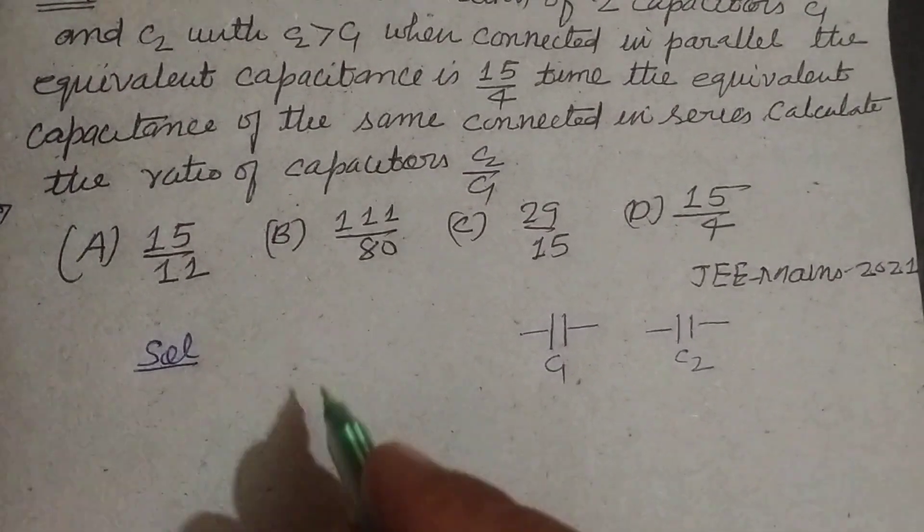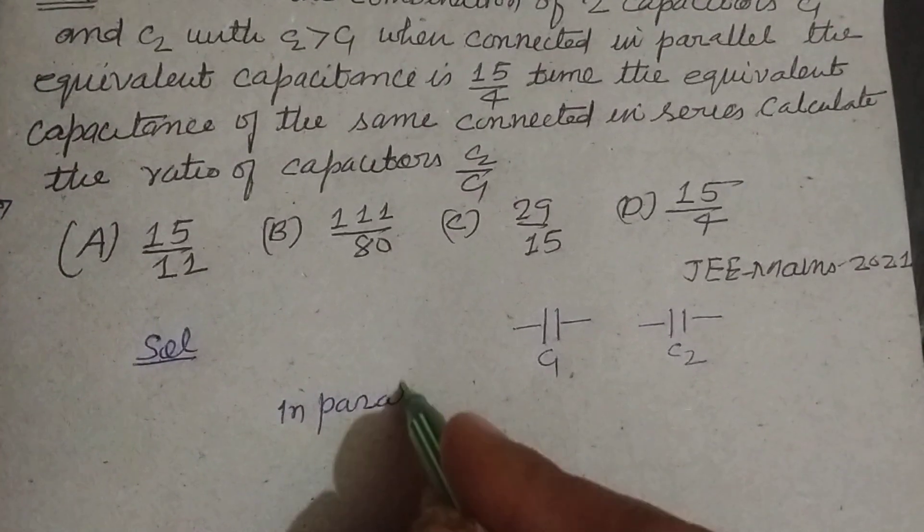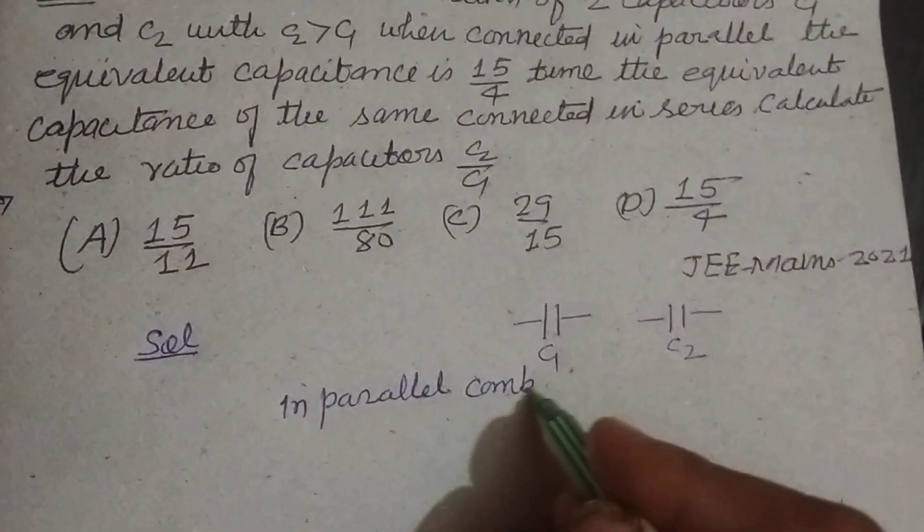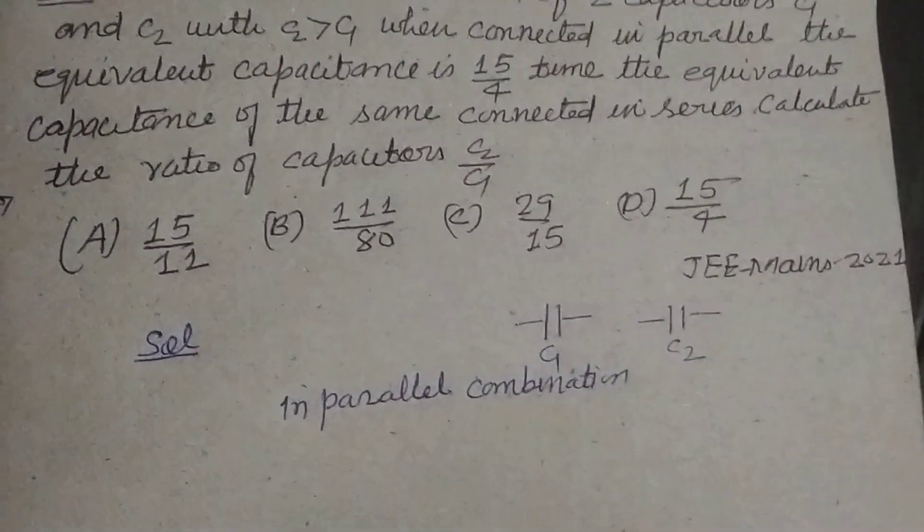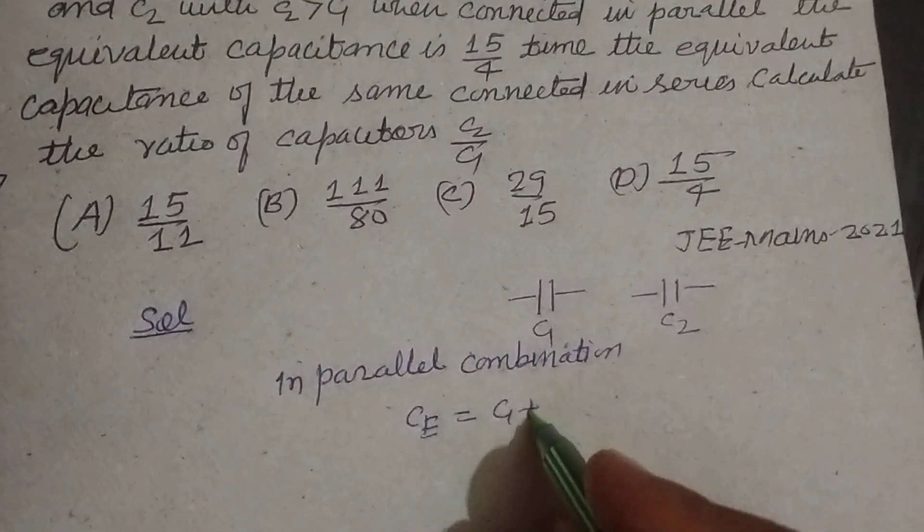Now, in parallel combination, C equivalent is C1 plus C2.